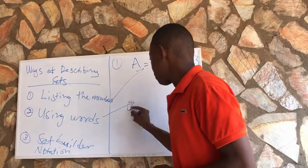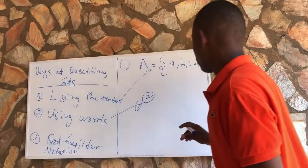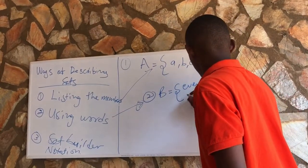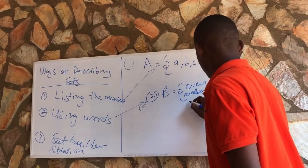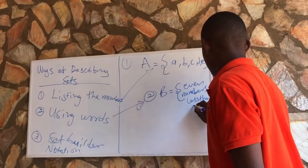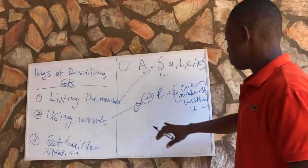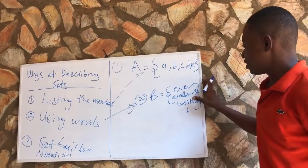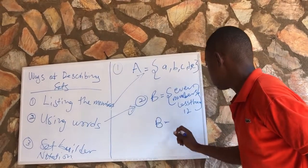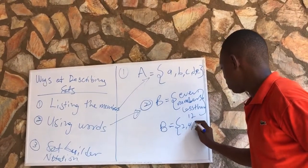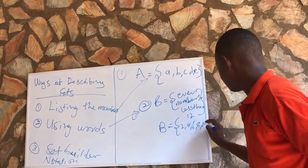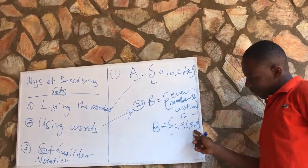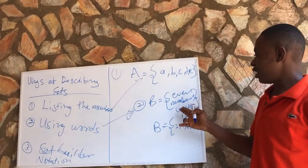We can also describe a set by using words. For example, Set B equals even numbers less than 12. We can also list Set B as {2, 4, 6, 8, 10} — these are the even numbers less than 12. But instead of listing them, we can write them using words.